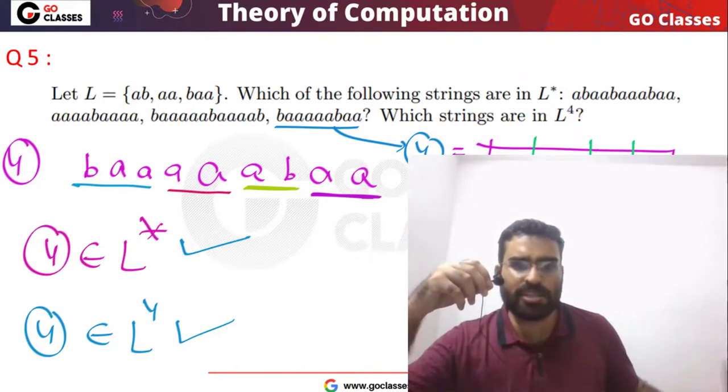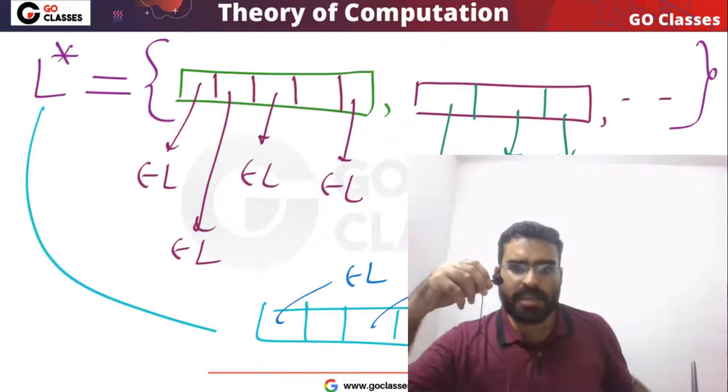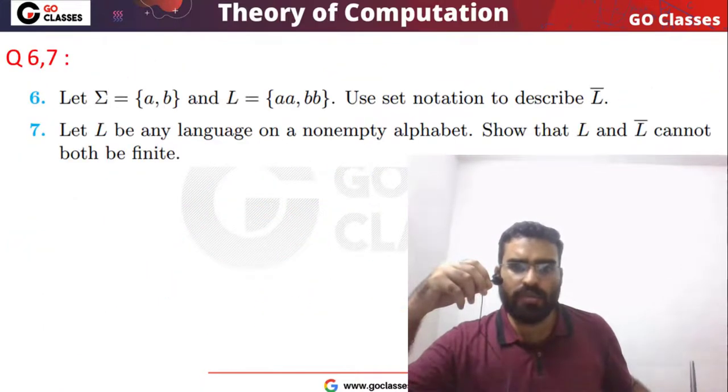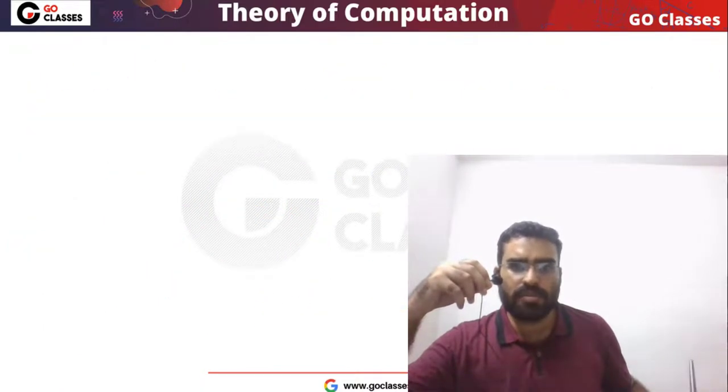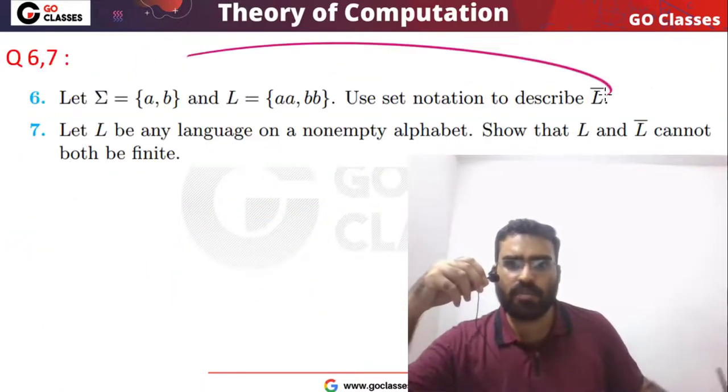So this is question number 5 from the Peter Lynch book. The key idea is: in L squared, every string has 2 parts from L; in L cube, 3 parts; in L power N, N parts. In L star, you can divide the string into any number of parts such that every part is a string of L. In the next video, we will solve more questions.